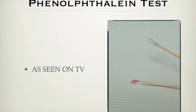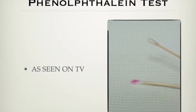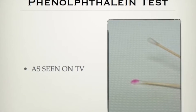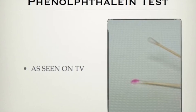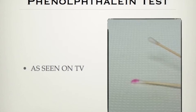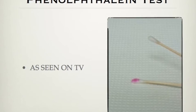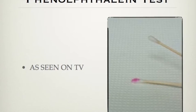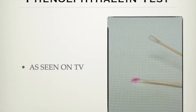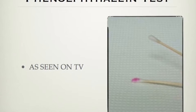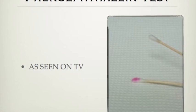The Kastle-Meyer test uses phenolphthalein. You can see this on TV when you watch CSI or any of the other crime shows. If the stain tests positive for blood, it shows pink on the swab.